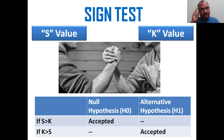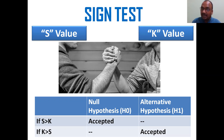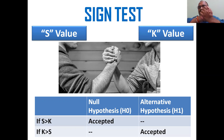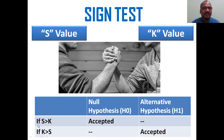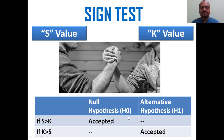In the Sign Test, keep in mind there are two main values: the S value and the K value. We have to calculate both. After getting the S value and K value, there is a competition between them. If S value is greater than K, you accept the null hypothesis H0. If K is greater than the S value, you accept the alternative hypothesis H1.